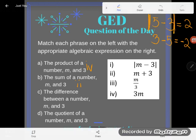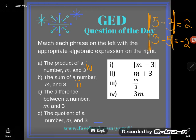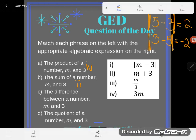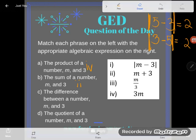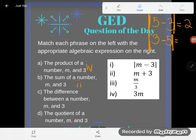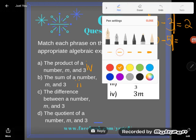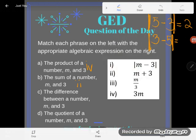So whether it was 5 minus 3 or 3 minus 5, if I did the problem this way, I would get a positive answer. Those absolute value bars say do the math on the inside, like 3 minus 5 or 5 minus 3, then take whatever answer you get and make it positive.